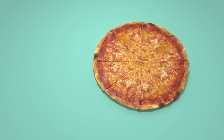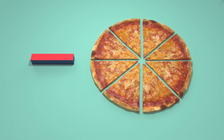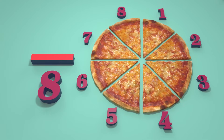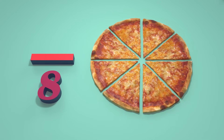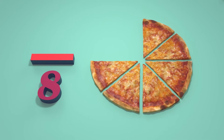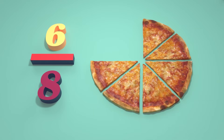If you take a whole pizza and cut it up into equal slices, then the number of slices goes under the line. And then your friend comes along and eats up two slices, and that leaves you with six. The six goes on top, and we're left with six-eighths of a pizza.